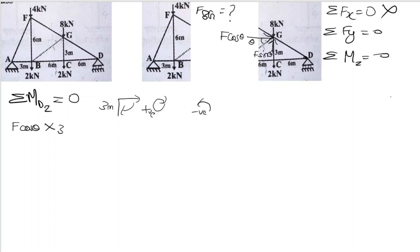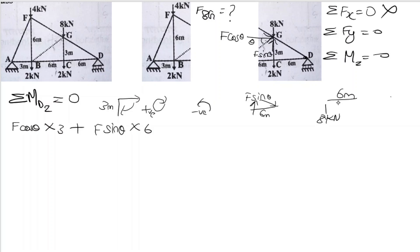We have F sin θ which is also clockwise, so it is plus. F sin θ multiplied by 6. And the 8 kN load at 6 meters rotates anticlockwise, so minus 8 into 6. Another load of 2 kN also contributes: 2 into 6 equals zero.